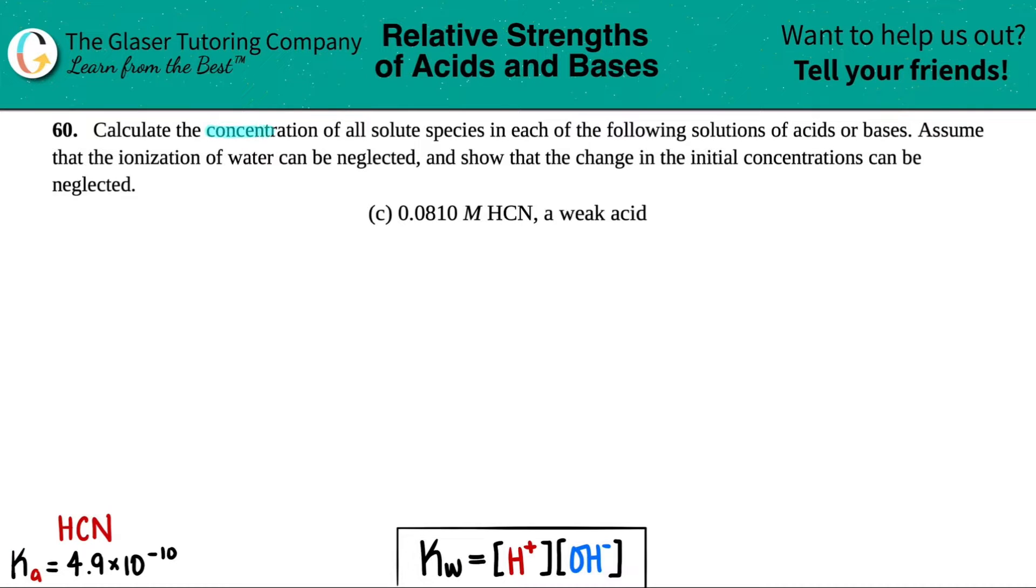Number 60. Calculate the concentration of all solute species in each of the following solutions of acids or bases. Assume that the ionization of water can be neglected and show that the change in the initial concentrations can be neglected as well. And then we have letter C. So in this case, we have to find the concentration of all solute species from a 0.0810 molarity HCN solution, which they told me was a weak acid.